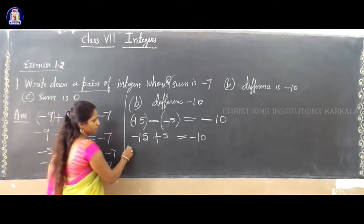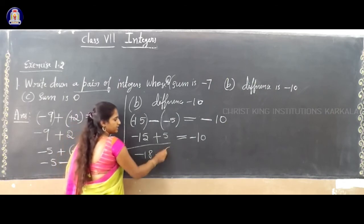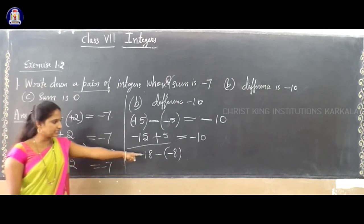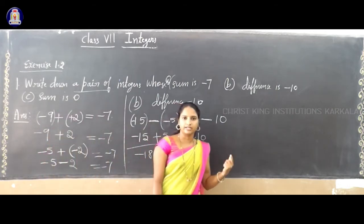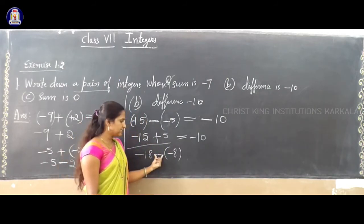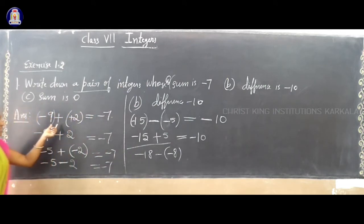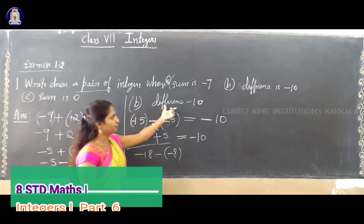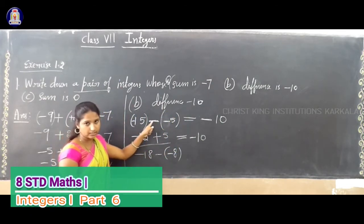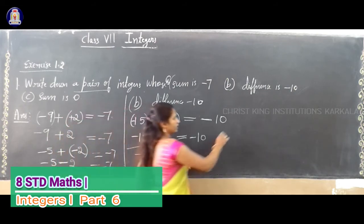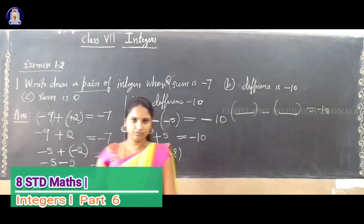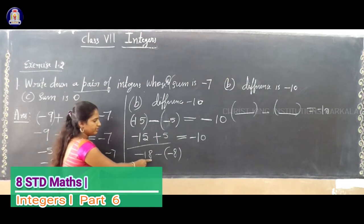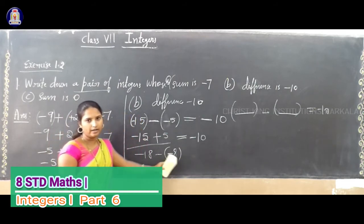For another example, consider minus 18 minus minus 8: that becomes 18 minus 8, which gives 10. So the answer is minus 10. You can write any integers in between a minus sign and the answer must be minus 10. To summarize: in the first question, sum means addition so write a plus sign; in the second question, difference means subtraction so write a minus sign.